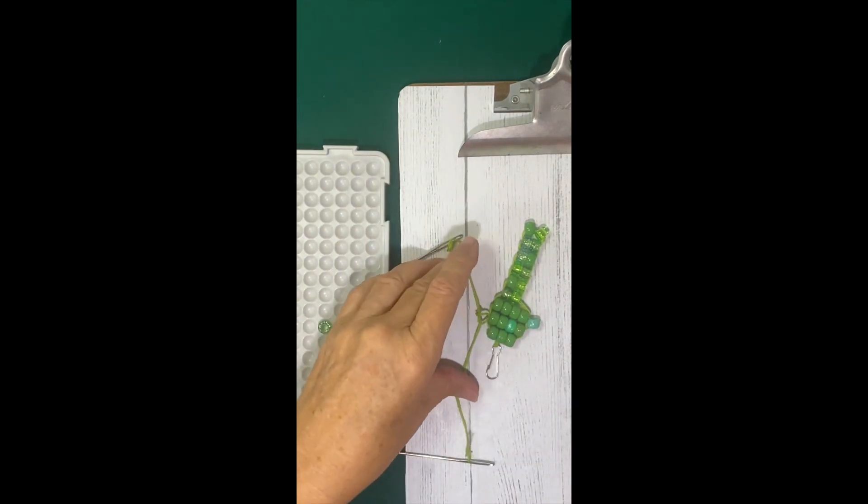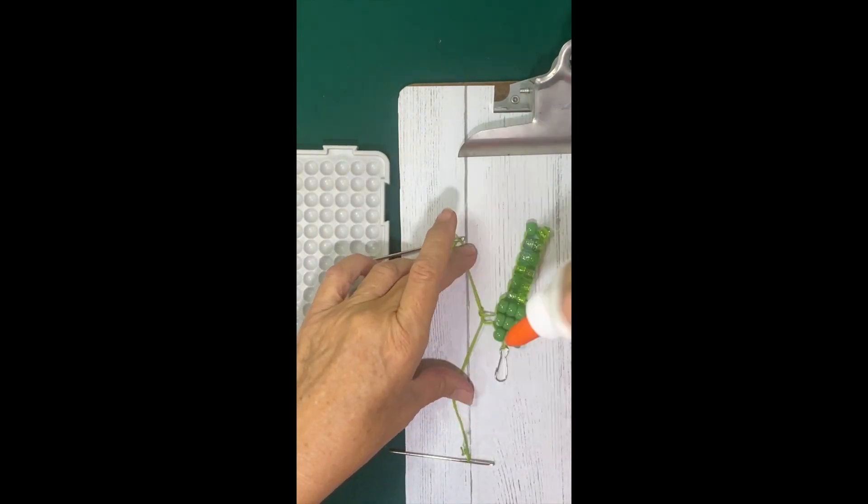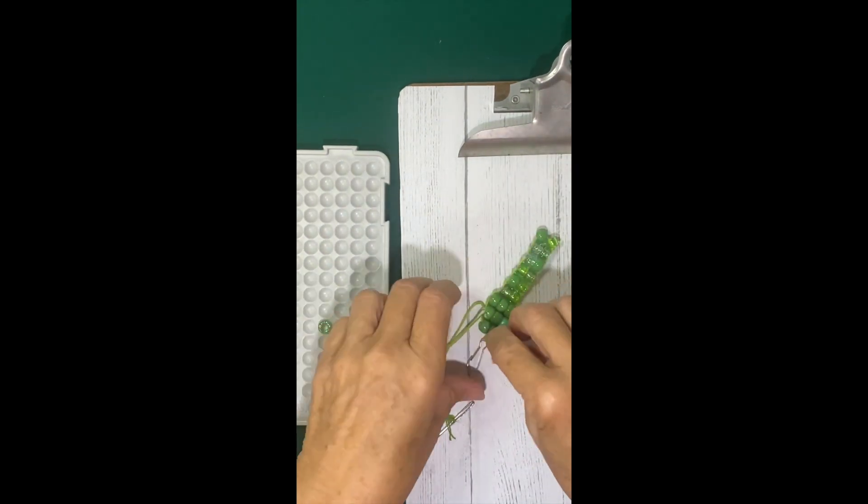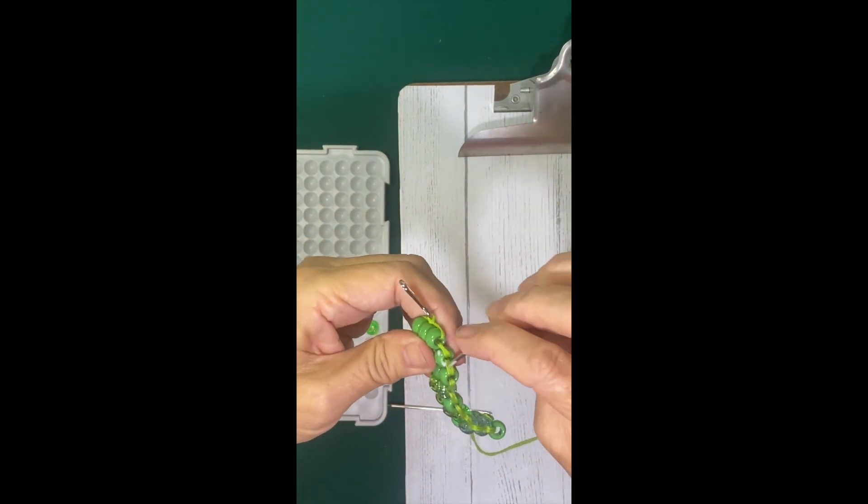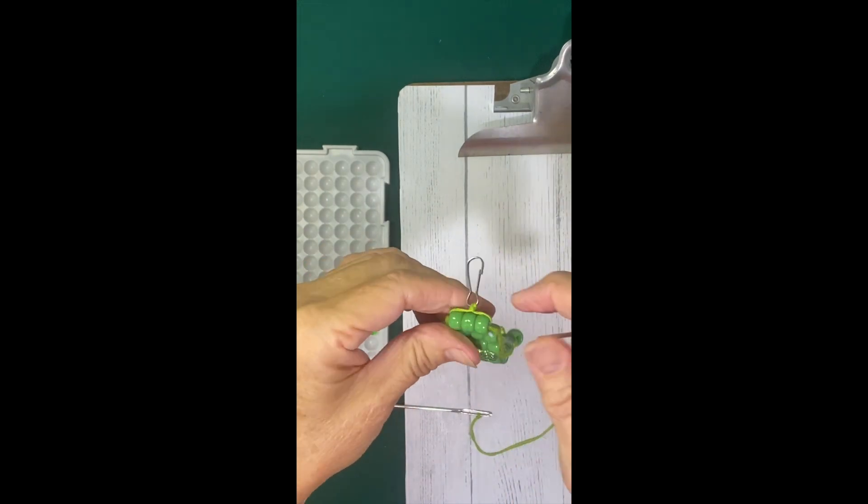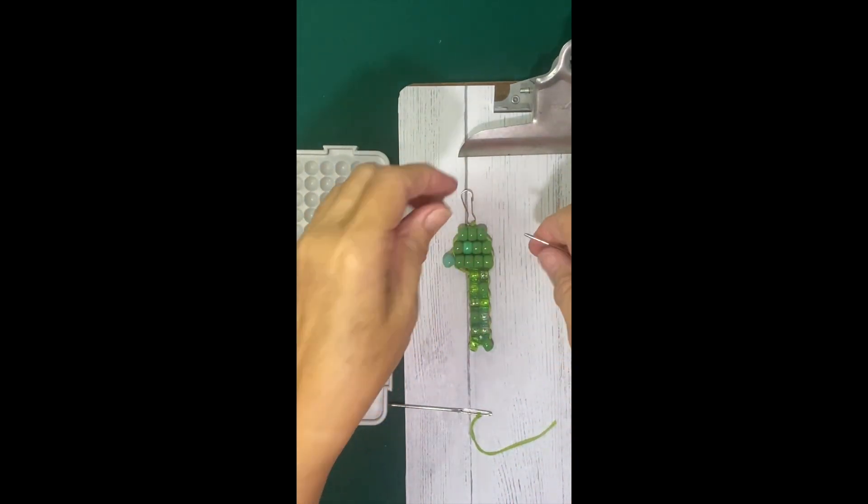Add a dab of glue. And while the glue is wet, pull it tight, trim the tails. And with your metal needle, take the knot and the tails and tuck it into a bead. It won't even show.